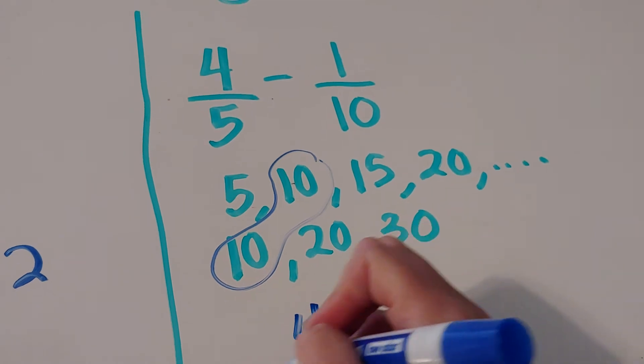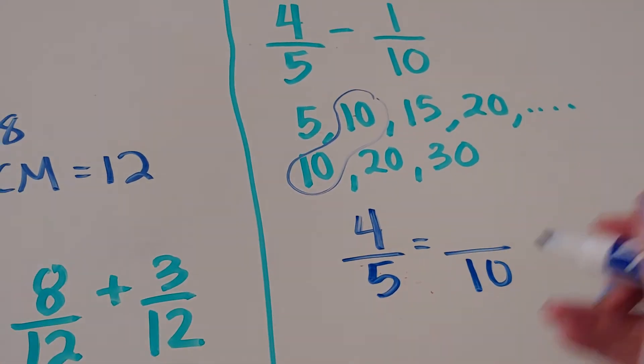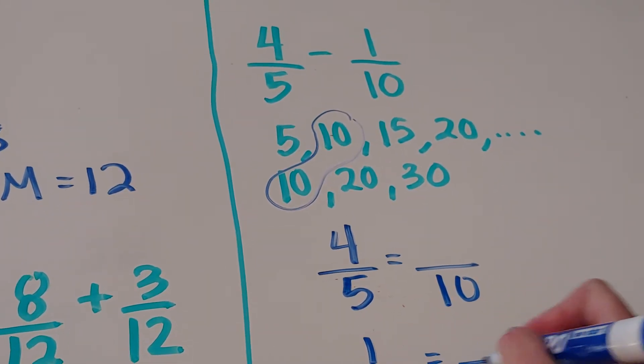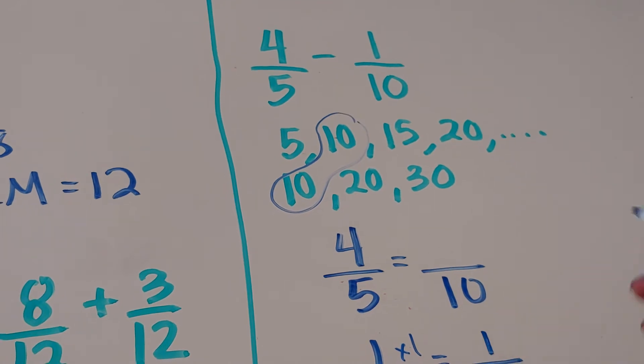So that means I want to turn 4 fifths into a denominator of 10. And 1 tenth, well, it's already a denominator of 10. So that one is a lot easier.